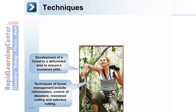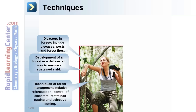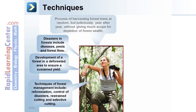Development of a forest in a deforested area to ensure sustained yield is a method used. Disasters in forests include diseases, pests, and forest fires, which may be controlled. Harvesting forest trees at random but judiciously, year after year without causing depletion of forest wealth, needs to be better regulated.